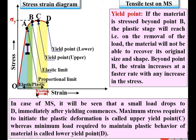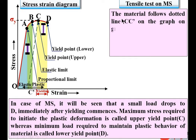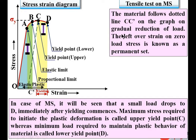The portion between C and D represents yielding — after point C there will be some elongation and the specimen is slightly elongated. If you draw a line C–C' parallel to OA, it will cut the x-axis at point C'. The material follows the dotted line C–C' on gradual reduction of load. The leftover strain at zero load stress — the portion O to C' — is known as permanent deformation.